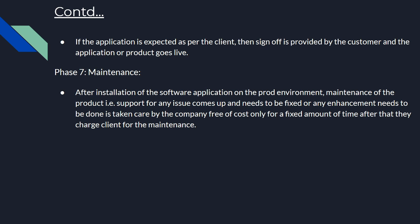After installation on the production environment, maintenance begins — supporting any issues that come up and handling enhancements. The company provides maintenance free of cost for a fixed period of time, after which the business partner charges the client for ongoing maintenance. For example, if the contract is for one year of development plus six months of free maintenance, after those six months the client is charged for further maintenance support.